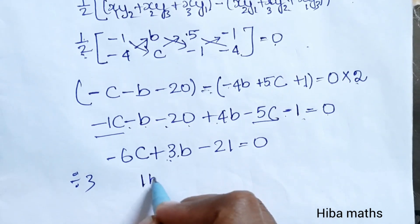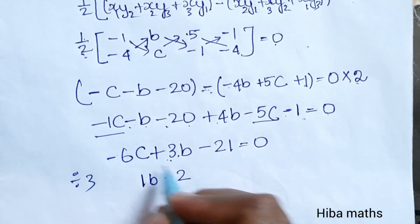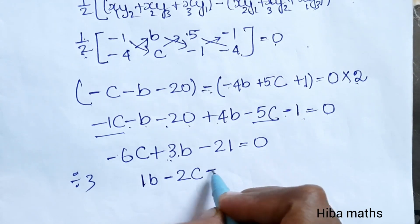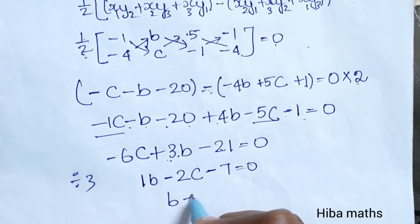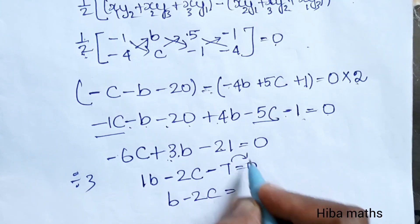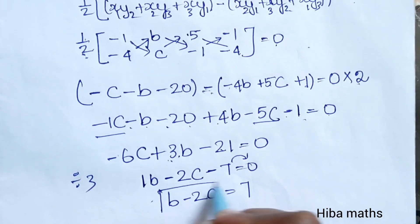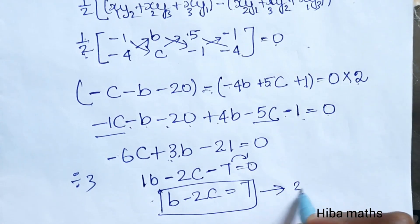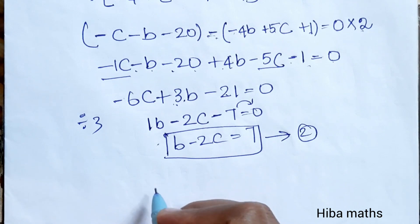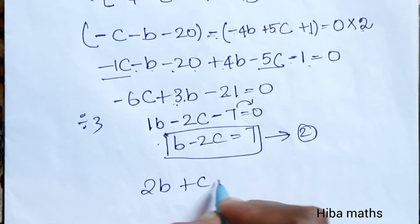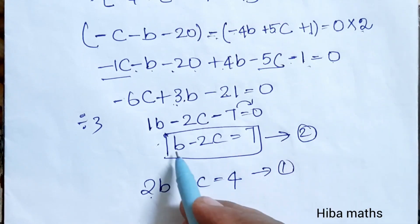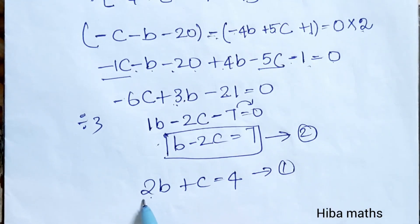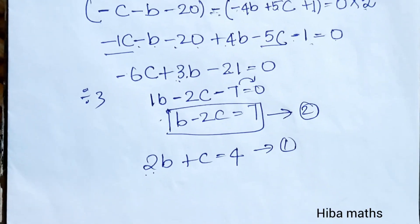After dividing by 3, we get: minus 3b is equal to minus 3, so b is equal to 1. This gives us one equation relating b and c.